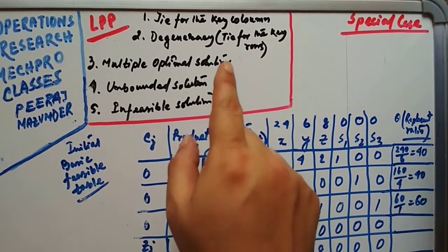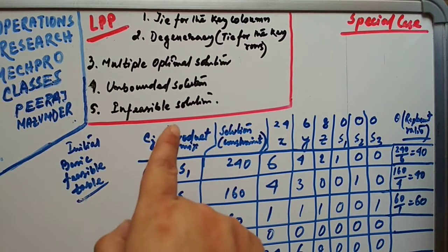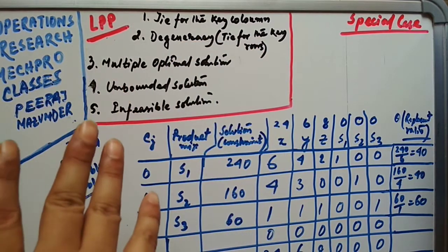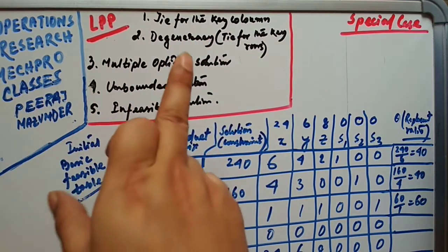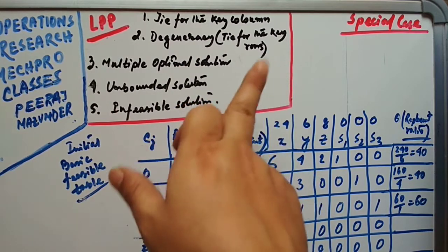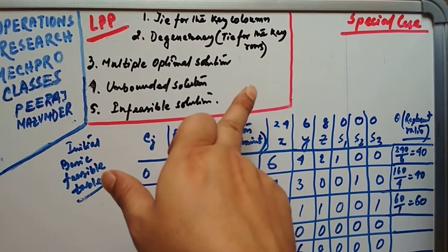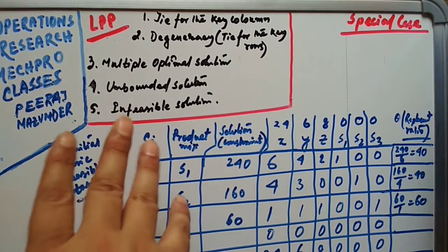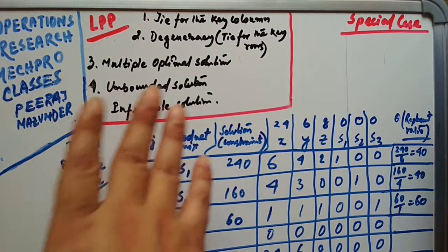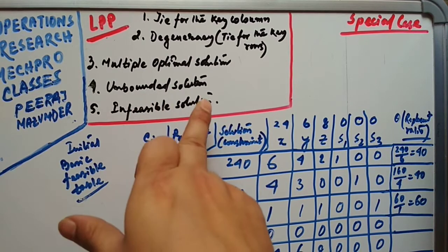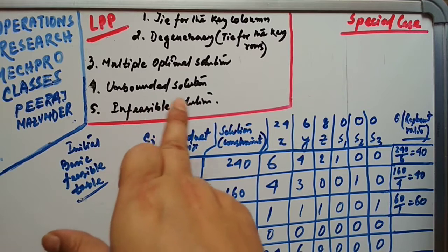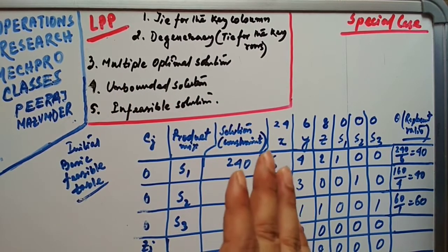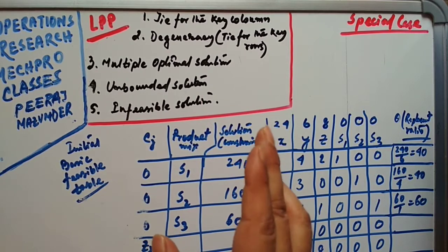Today we will see five different special cases involving the simplex method in LPP. The first one is the tie for the key column — what to do when facing a tie in the key column. Second is degeneracy, which is a tie for the key rows. Next is multiple optimal solution, followed by unbounded solution, and finally infeasible solution. Stick to the video till the end for a clear idea on these special cases.